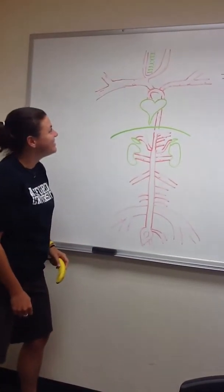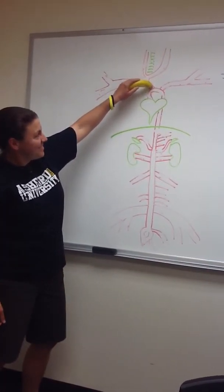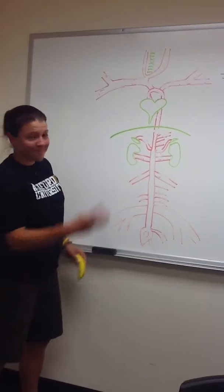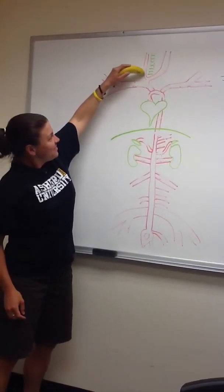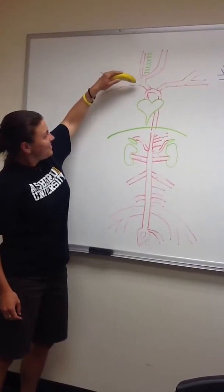From the brachiocephalic, it then divides into three sections, really. The left common carotid, the right common carotid, and the right subclavian.